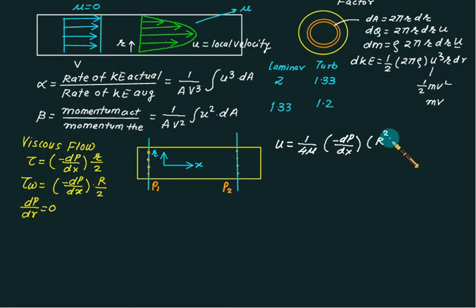Capital R is total radius, so remember two equations: one is tau equation and one is u equation. In the equation of u, if you put small r equal to zero, you always get the maximum velocity.